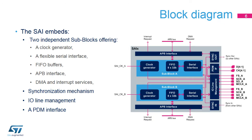The SAI is composed of two independent sub-blocks, sub-block A and B. Each sub-block has its own APB interface, clock generator, FIFO buffer, DMA interface, and interrupt interface. Each sub-block can be configured in receiver or transmitter mode and in master or slave mode with its own protocol. Internal and external synchronization allows two sub-blocks to be synchronized, or two SAI interfaces to be synchronized.